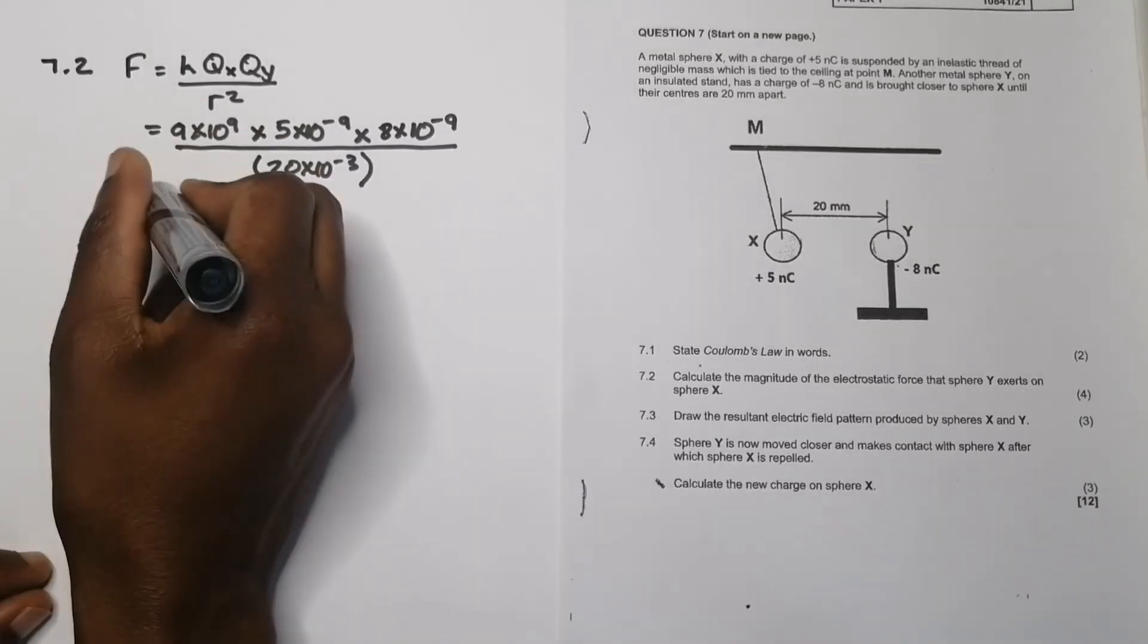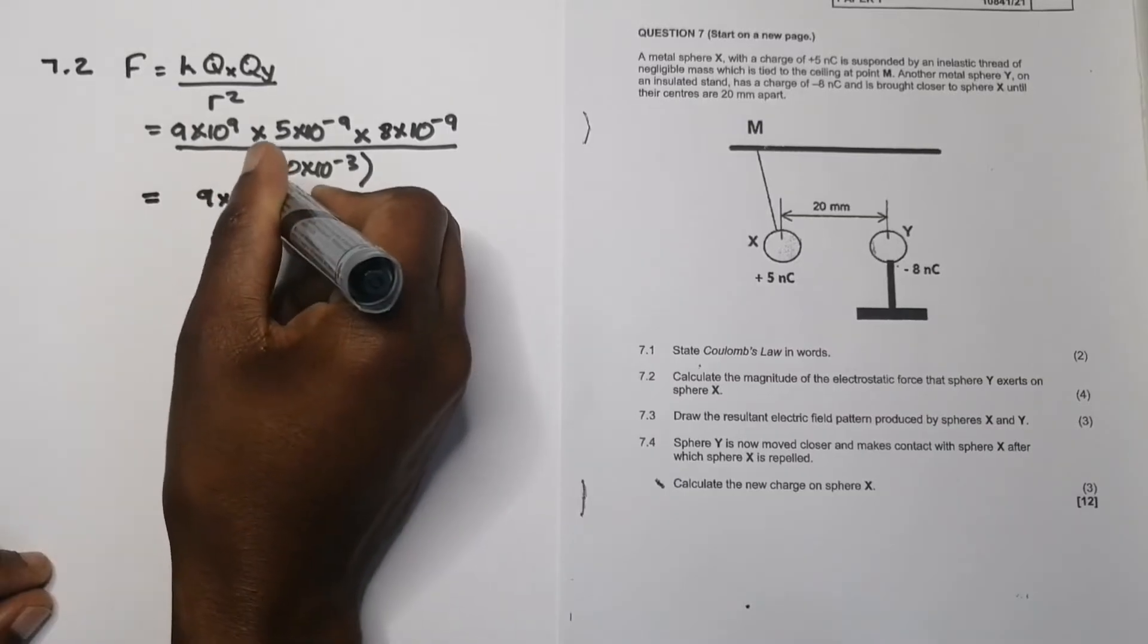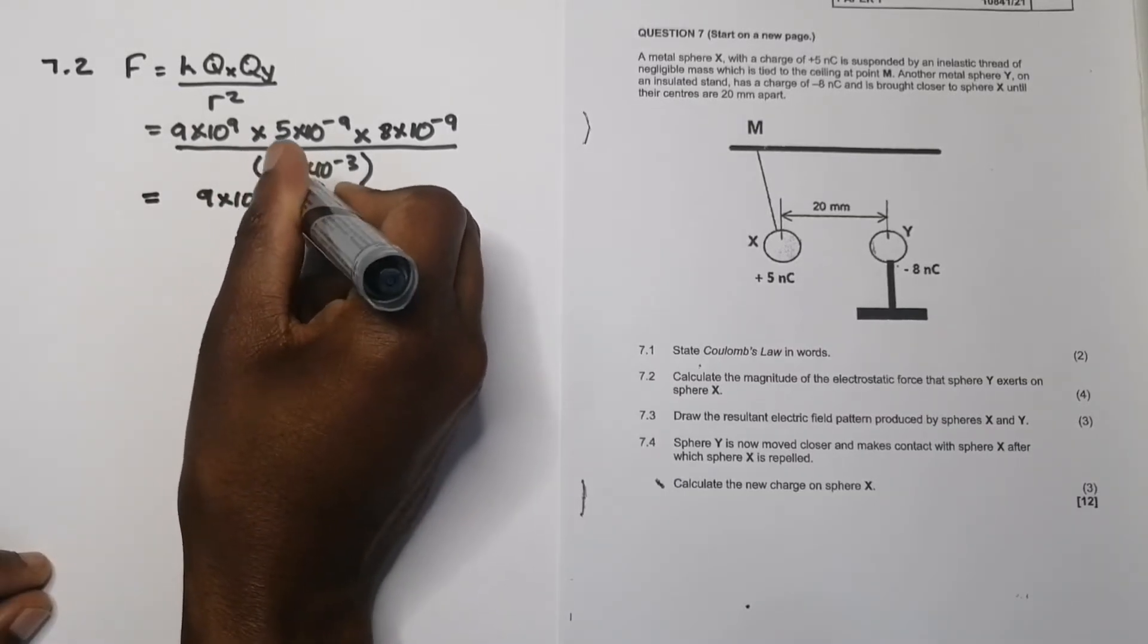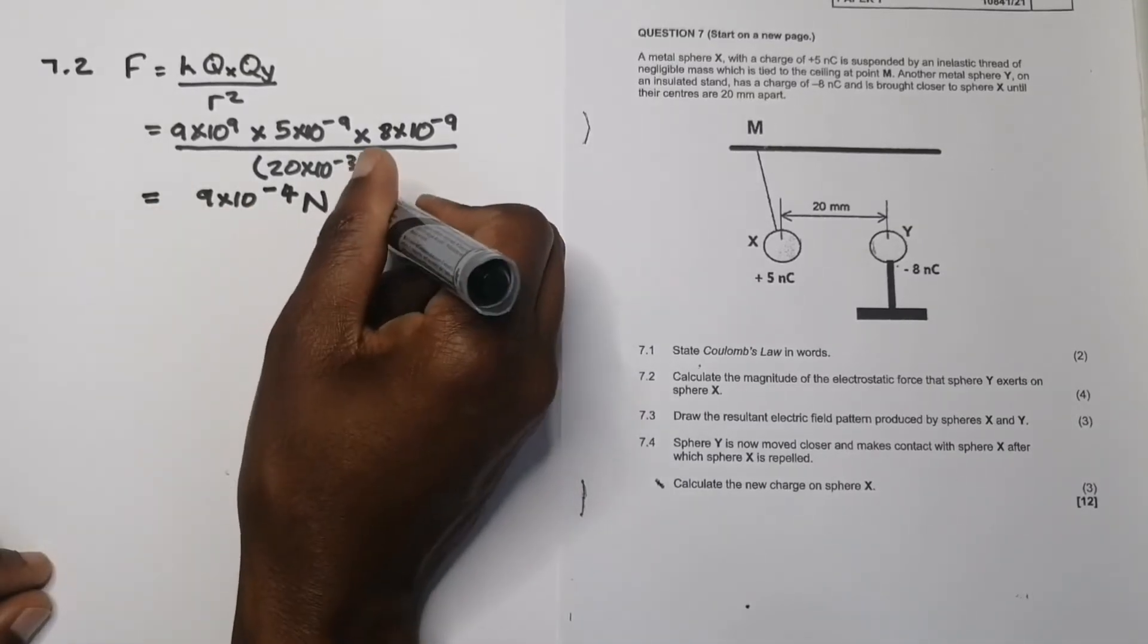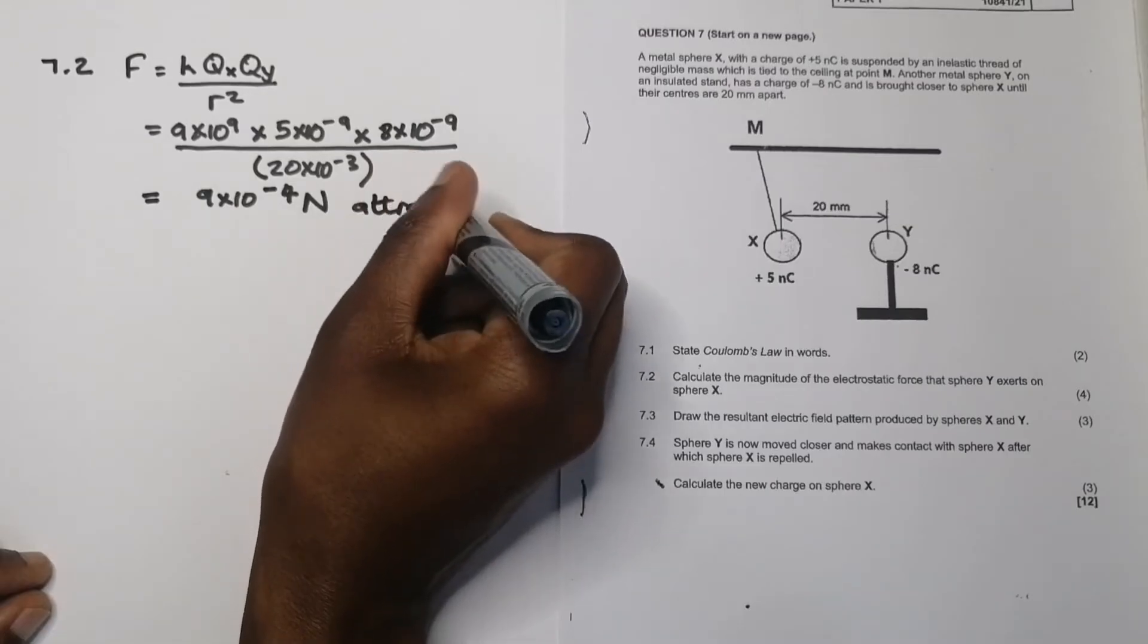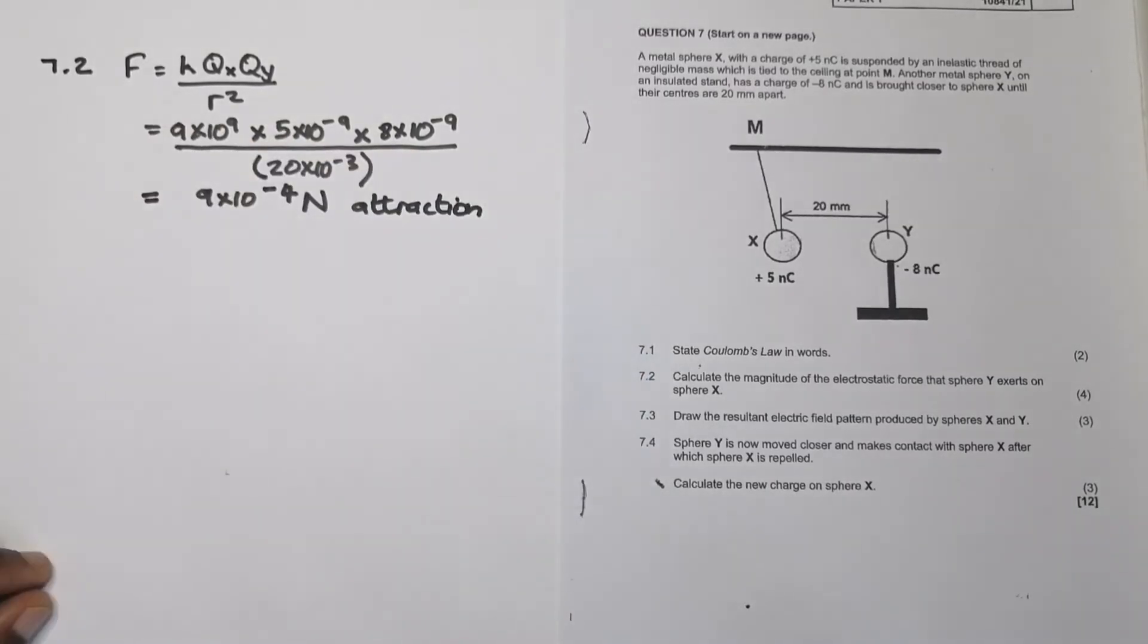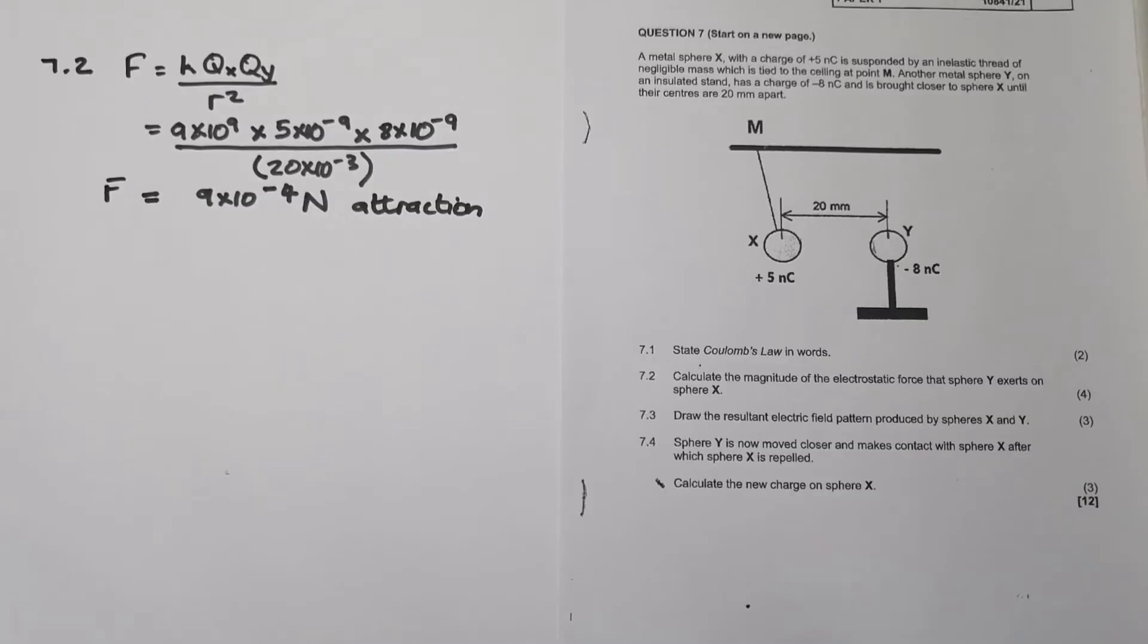So quickly, let's find out our answer. And I get an answer of 9 times 10 to the power minus 4 newtons. You can verify that. And remember, this would be a force of attraction. Why? Because I've got unlike charges. So that would be a force of attraction between those two.